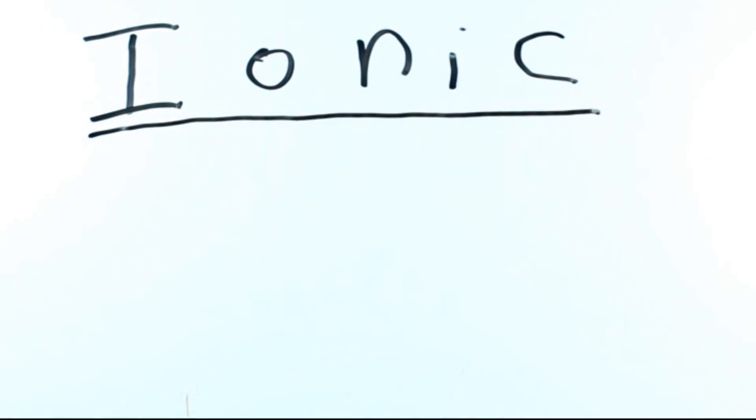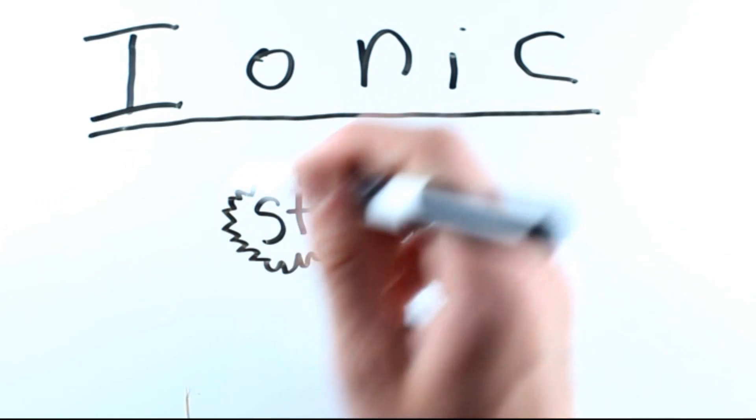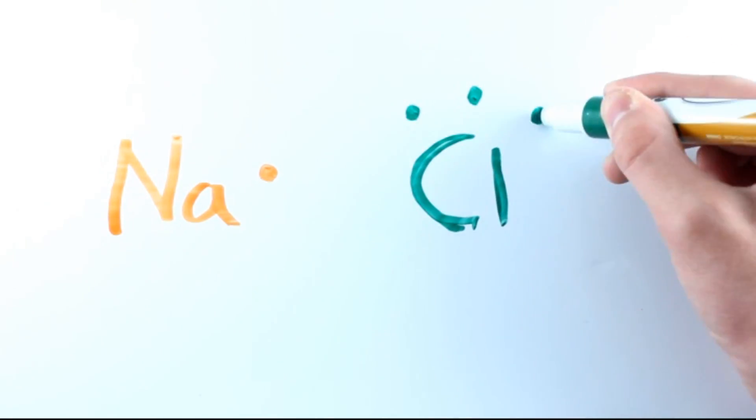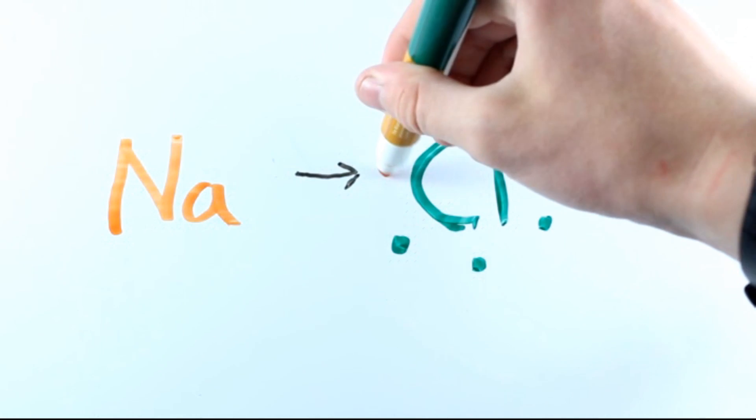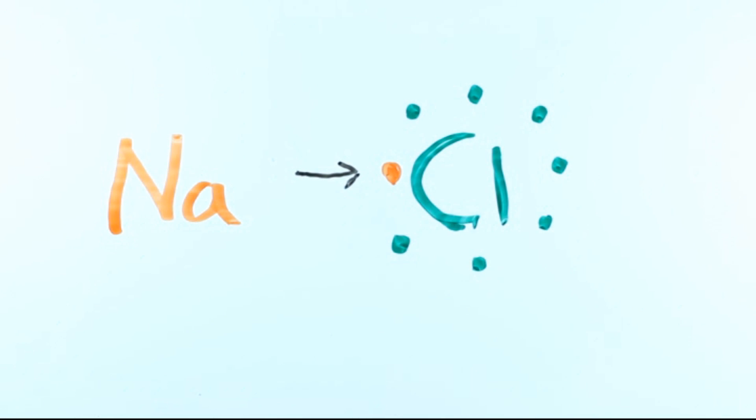The other way they can bond is called ionic bonding, and that is when an atom steals from another to be full. If we have a sodium atom and a chlorine atom, the chlorine atom only needs one more electron to have a full outer shell. So it can steal the one from the sodium atom and then it is full.